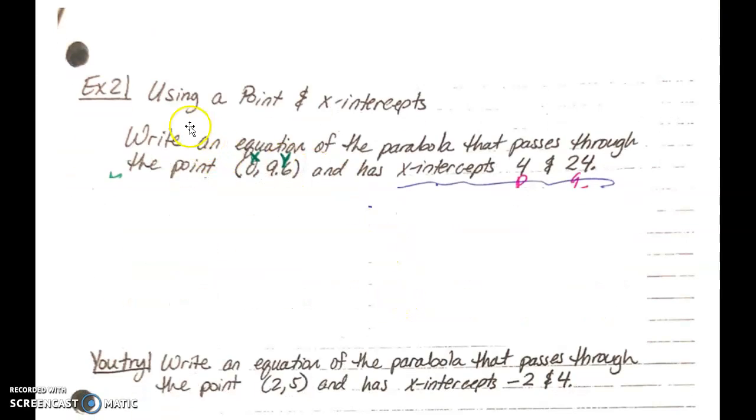All right, let's take a look at example two. Now, this is using a point and the x-intercepts. Now, if it's x-intercepts, that means we are using intercept form. So we have write an equation of the parabola that passes through the point of 0,9.6, and you can already see that I have the x and y there because each of your points here is going to be your x and the y that you're going to use, and your x-intercepts, 4 and 24. The x-intercepts are your p and your q. So you're going to be plugging those in for your p and your q in intercept form.